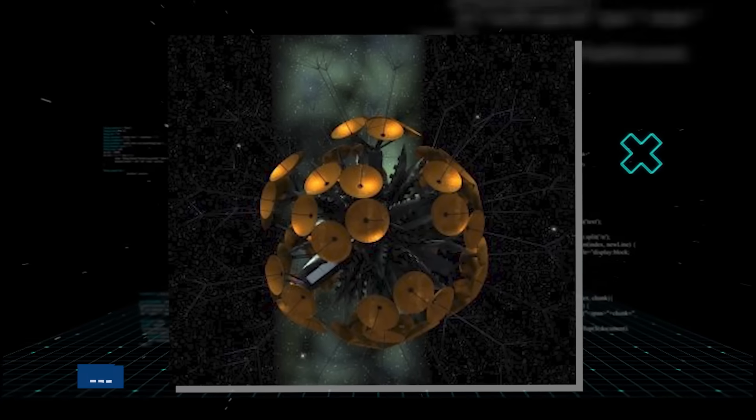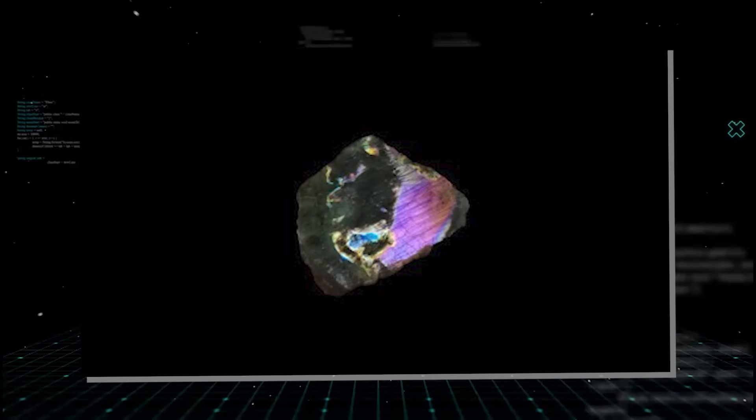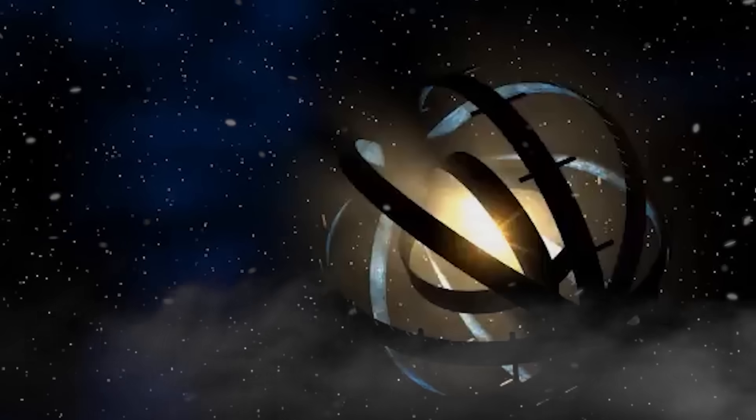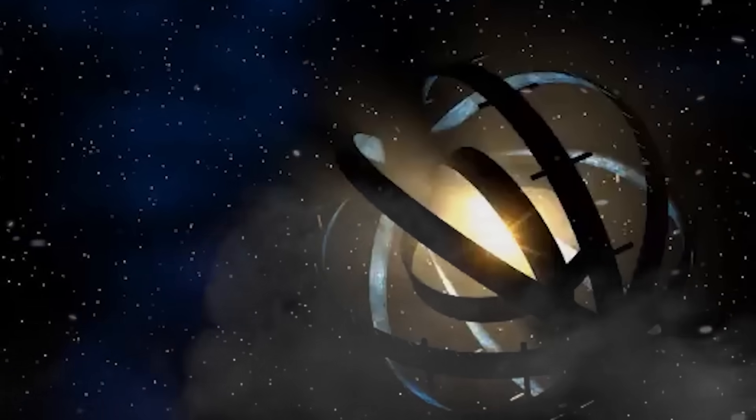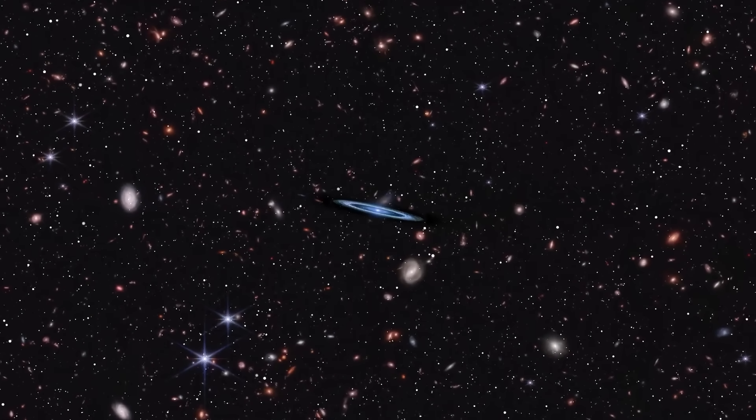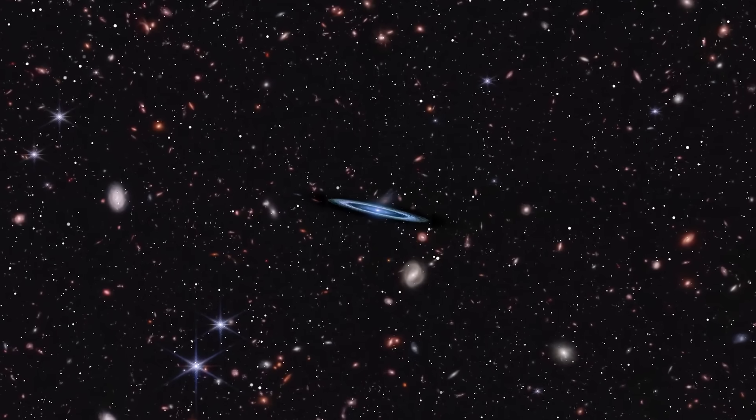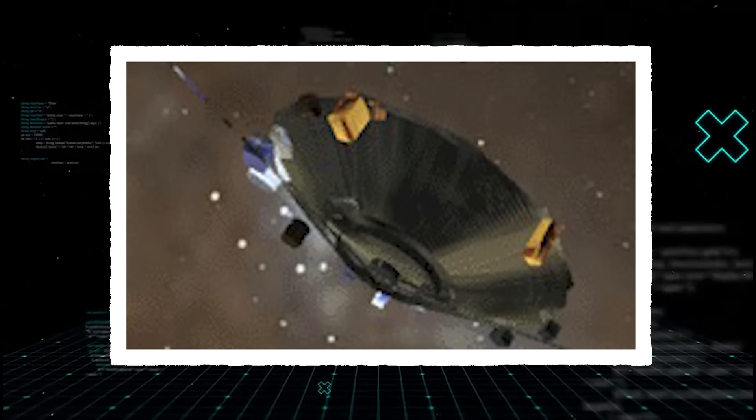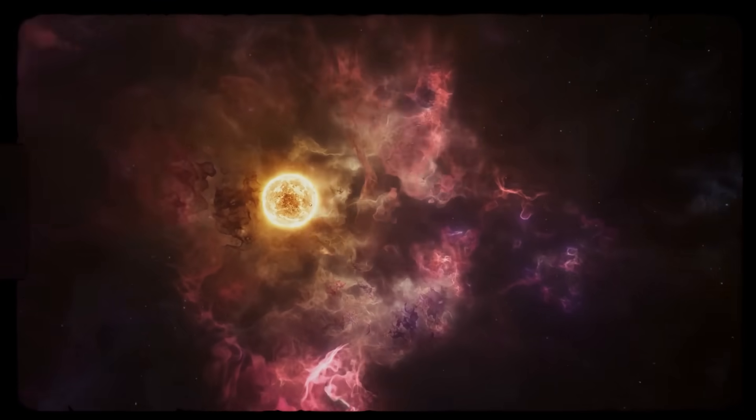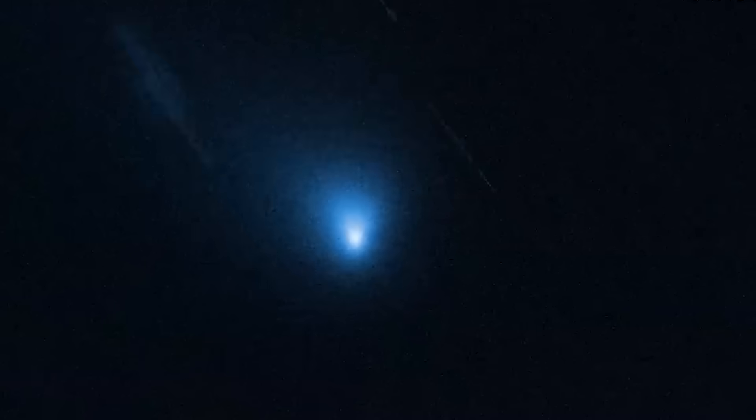This leads to the idea of a bracewell probe. This isn't just a simple artifact like a solar sail. It's a hypothetical, autonomous, robotic probe sent by an advanced civilization to explore other star systems. In this scenario, the orbital deviation isn't an accident of physics. It's a deliberate course correction. Perhaps the probe woke up as it entered our system and is now maneuvering to get a better look, using our sun's gravity for a slingshot maneuver to a new, more interesting target within our system.